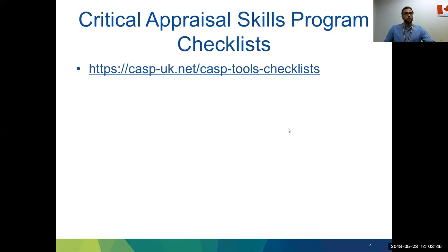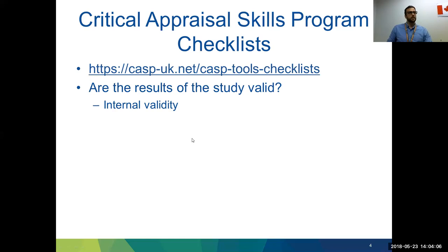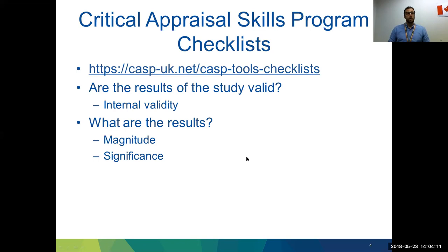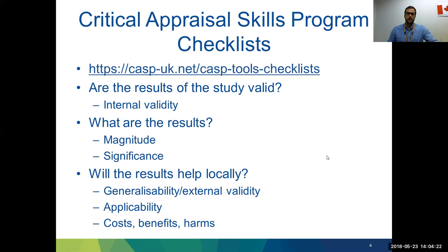There's the Critical Appraisal Skills Programme checklists, which are really useful and provide simple to follow critical appraisal checklists for all common study types. Generally they're structured around three questions: are the results valid, looking at internal validity? What are the actual results, considering magnitude and statistical significance? And how might those results be of benefit, looking at generalizability, external validity, applicability, and cost-benefit considerations.